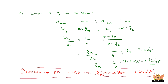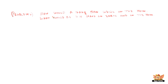Since the weight on the moon is 1/6 that of weight on earth, the acceleration due to gravity on the moon is also 1/6 that of acceleration due to gravity on the earth. Now let's see Problem 2: how would a 70 kg man weigh on the moon, and what would be his mass on earth and on the moon?